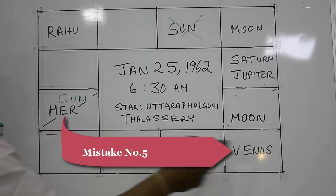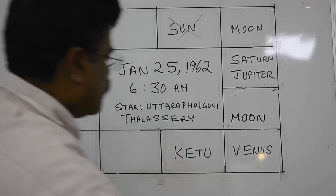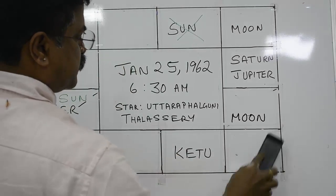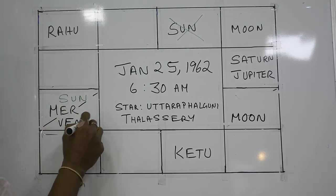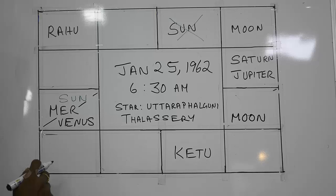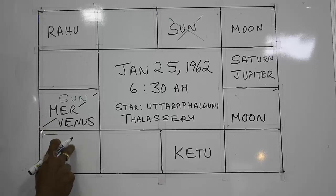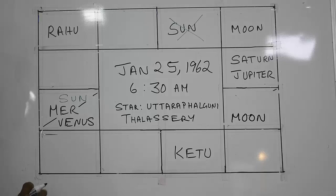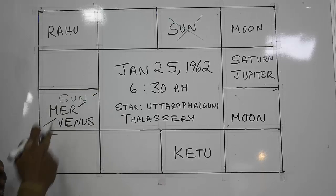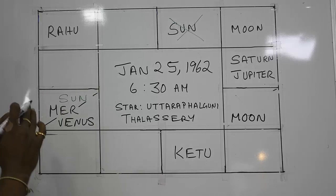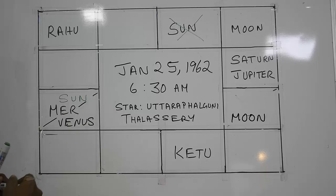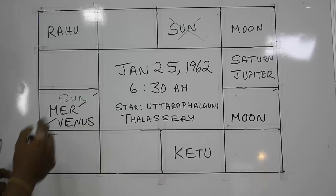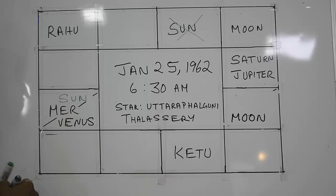Mistake number five: Venus cannot be so far away from the sun. Remove Venus from here — in this case Venus is over here on this date. But even if you don't know where it was, the maximum it can be is within two signs on either side. The distance Venus can travel from the sun is somewhere between 45 and 47 degrees and never greater than that. In any horoscope, if you see Venus beyond 47 degrees on either side of the sun, it is definitely wrong.